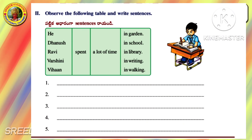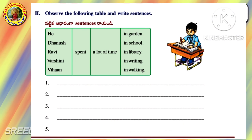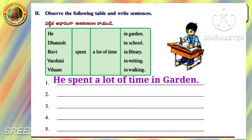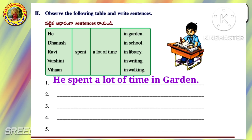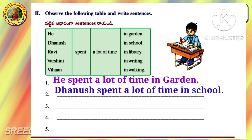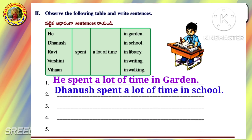Observe the following table and write sentences. First: He spent a lot of time in the garden. Second: Dhanush spent a lot of time in school.